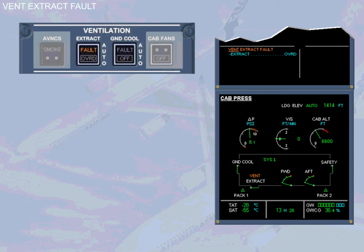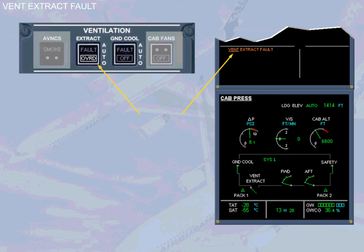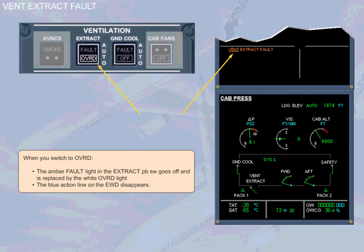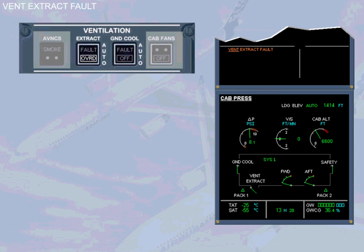The ECAM actions now have to be performed. In the case of a ventilation extract fault, the procedure is to select the OVERRIDE EXTRACT push button switch located on the ventilation panel. When you switch to override, the amber fault light in the extract push button switch goes off and is replaced by the white OVERRIDE light, and the blue action line on the engine warning display disappears. On the ECAM cabin pressurization page, note that the ventilation system has been reconfigured, as the extract valve is now partially open to ensure adequate ventilation of the avionics system.